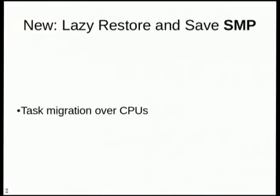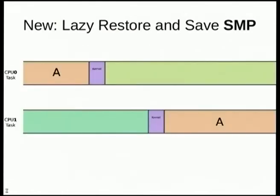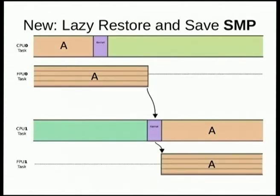The big piece is SMP — multiprocessor. What happens if we start migrating tasks from one CPU to another? Now we have CPU0 at the top and CPU1 at the bottom. CPU0 starts off running task A and then switches to some other task. Then CPU1 comes along and wants to switch over to A. But possibly we have the floating point state still on CPU0. So CPU1 has to get that state from CPU0.